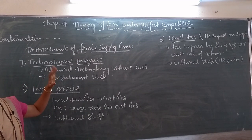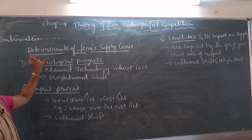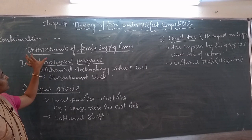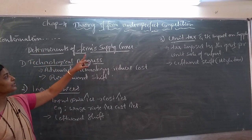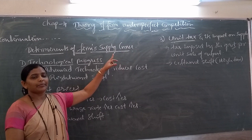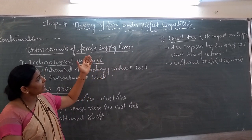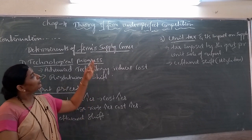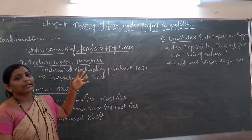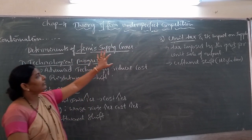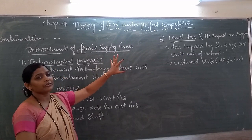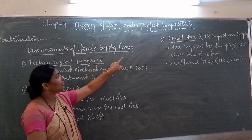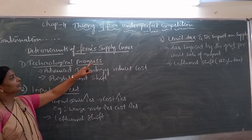In today's class I am going to explain determinants of firm's supply curve. So what is a supply curve? A supply curve shows the level of output a firm produces at different market prices. So which are the determinants of the firm's supply curve? Let us discuss one by one.